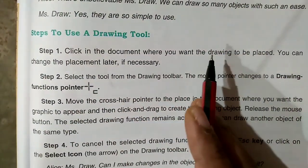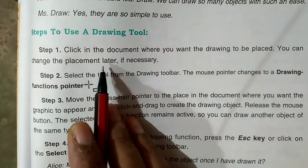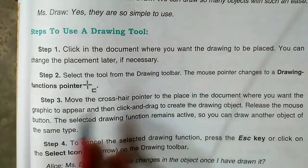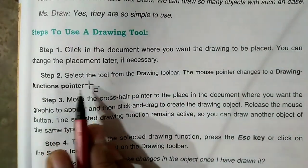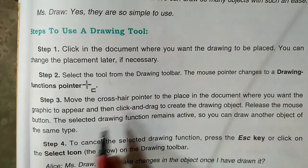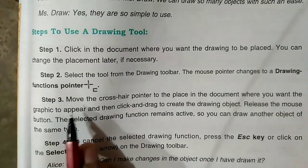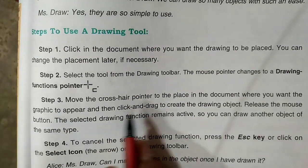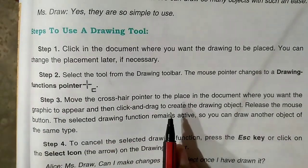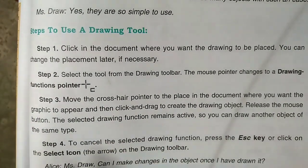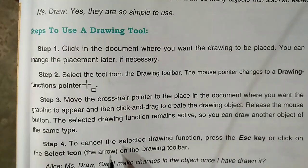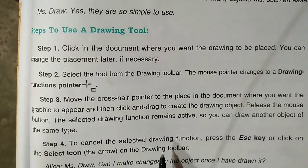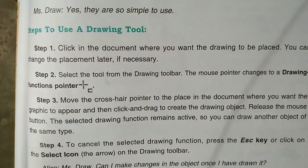Steps to use a drawing tool. Step 1: Click on the document. Step 2: Select the tool. Step 3: Move the crosshair pointer. Step 4: To cancel the selected drawing function.